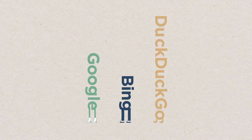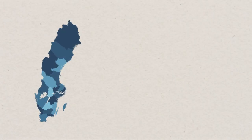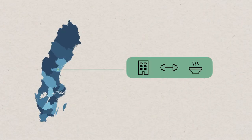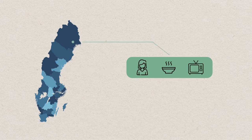Depending on your search history and geographic location, the search engine will adjust the results. In other words, the same search can give different results depending on what you have searched for earlier and where you are located.